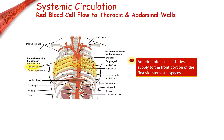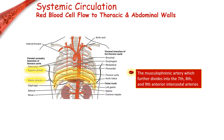From there, there are many branches out, including the anterior intercostal arteries, which supply to the front portion of the six intercostal spaces. The musculophrenic artery further divides into the 7th, 8th, and 9th anterior intercostal arteries. The internal thoracic artery then branches into the superior epigastric artery, which supplies the superior abdominal wall. Likewise, the inferior epigastric artery connects to the superior epigastric artery and supplies the inferior abdominal wall. For each of these arteries supplying the thoracic and abdominal wall, there is a companion vein used for drainage that drains into the brachiocephalic veins and then merges to become the superior vena cava.